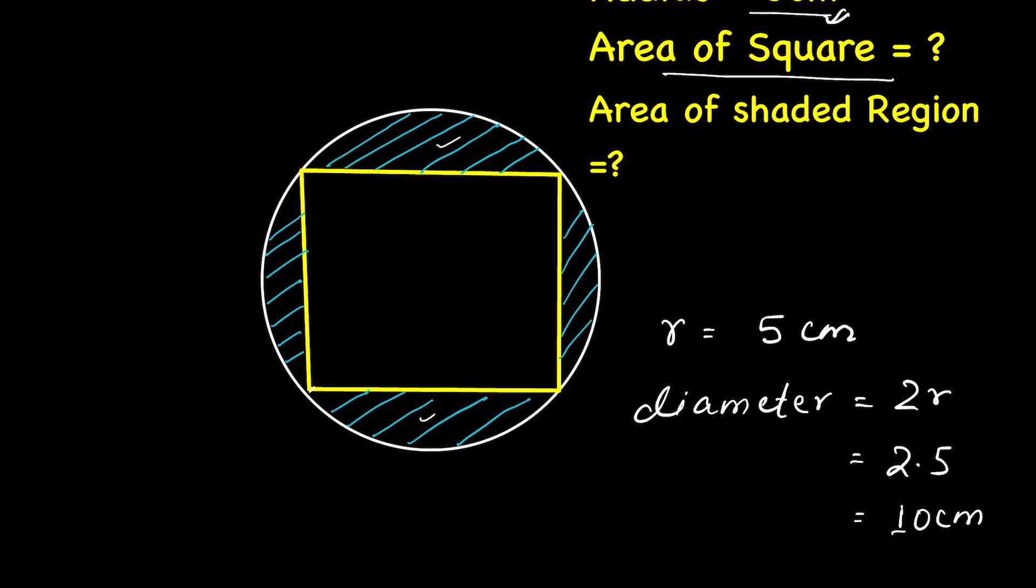Diameter will be like this from one end to another end. This is the diameter of the circle. And this diameter of the circle is also diagonal of the square.